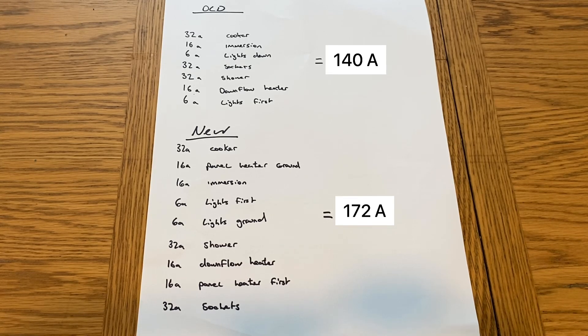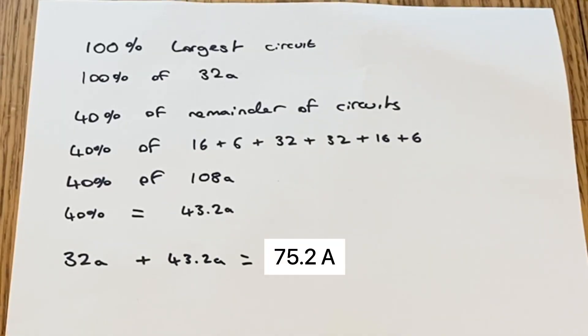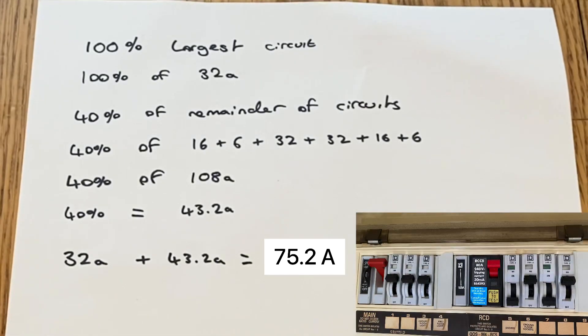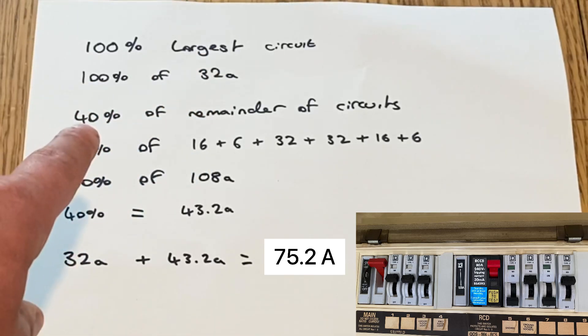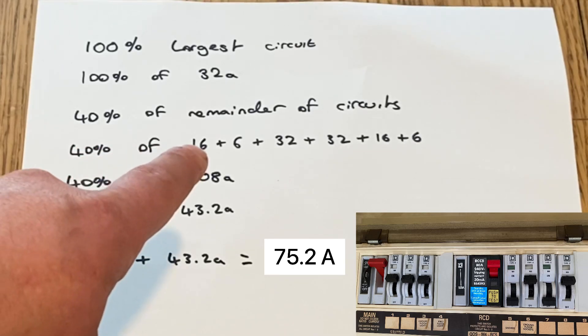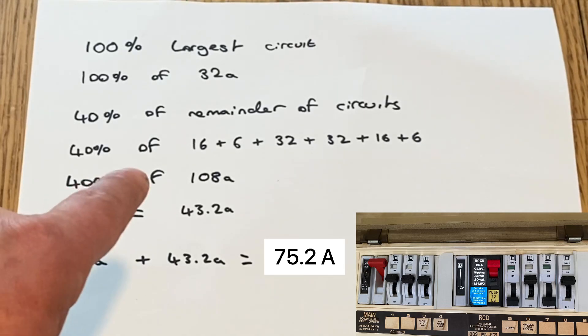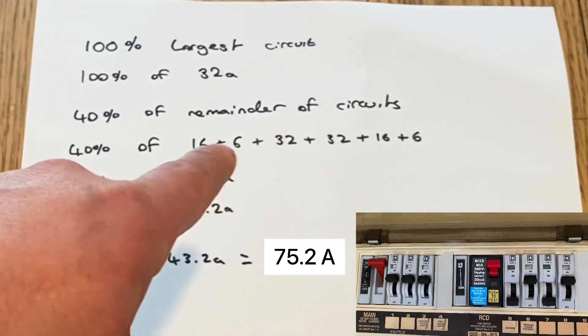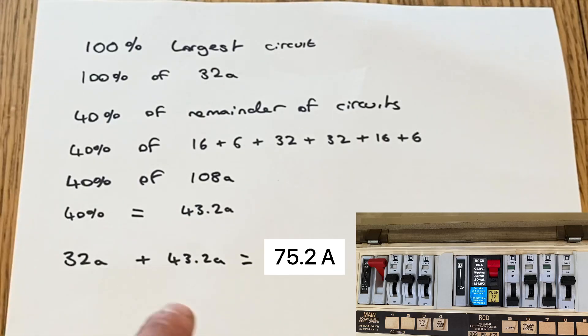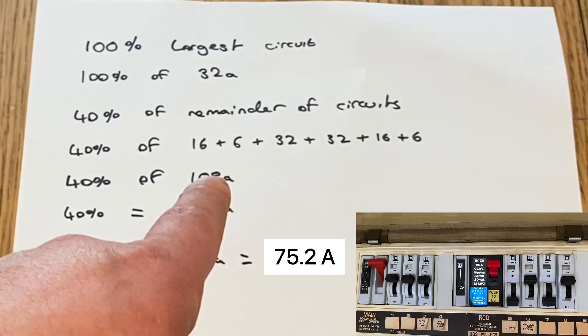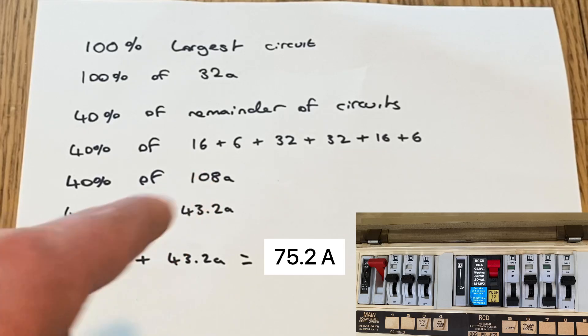As you can see, what we've done first is we took 100% of the largest circuit, which is 32 amps. We've then took 40% of the remainder of the circuits. So 40% of the remainder of the circuits added together, not the 32 amps of the largest that we already took. We would get 108 amps. If we take 40% of 108 amps, the easiest way is if we added our largest circuit of 32 amps to the remainder of our circuits with the diversity included would actually give us 75.2 amps.